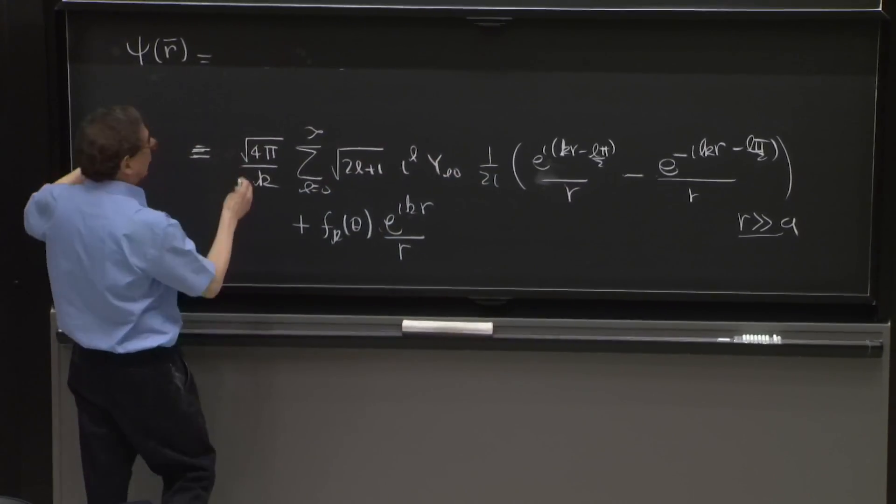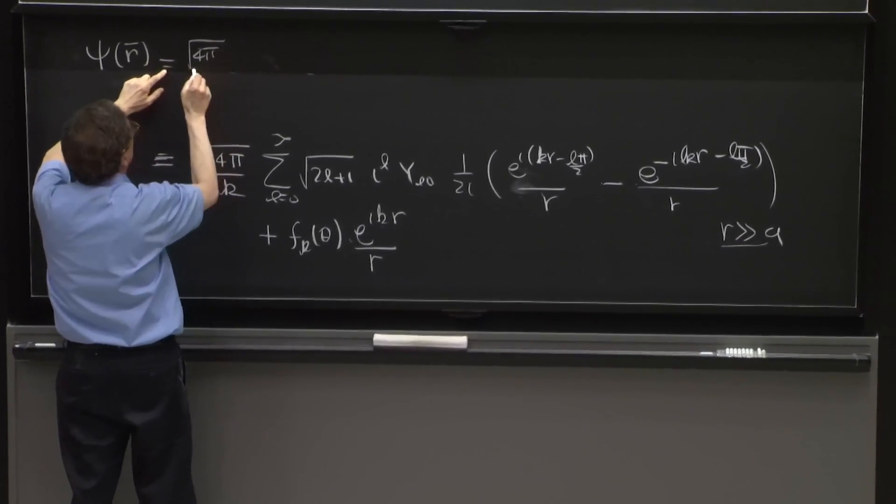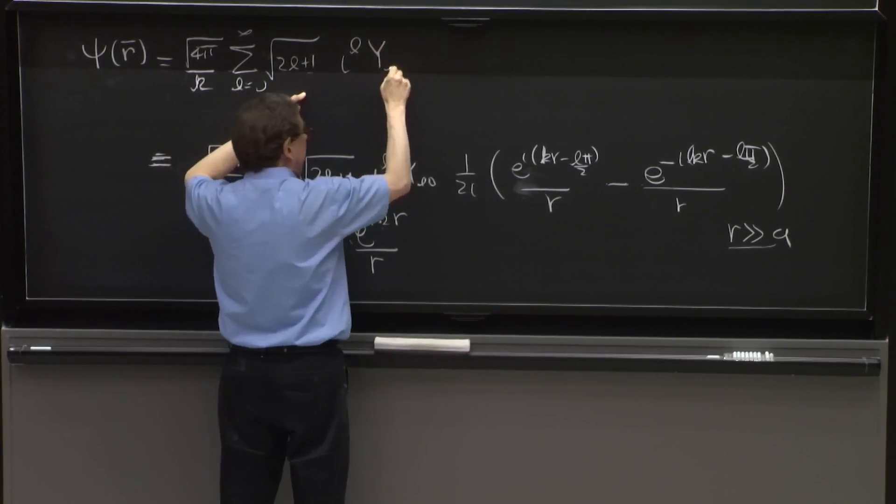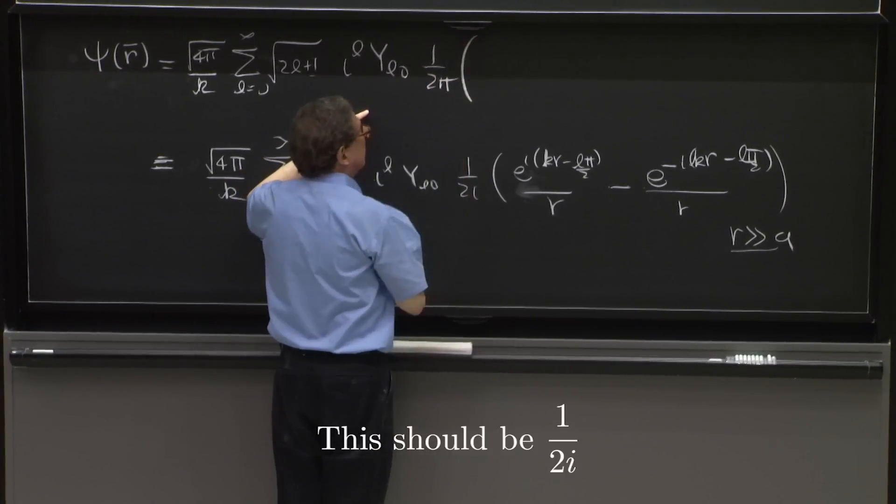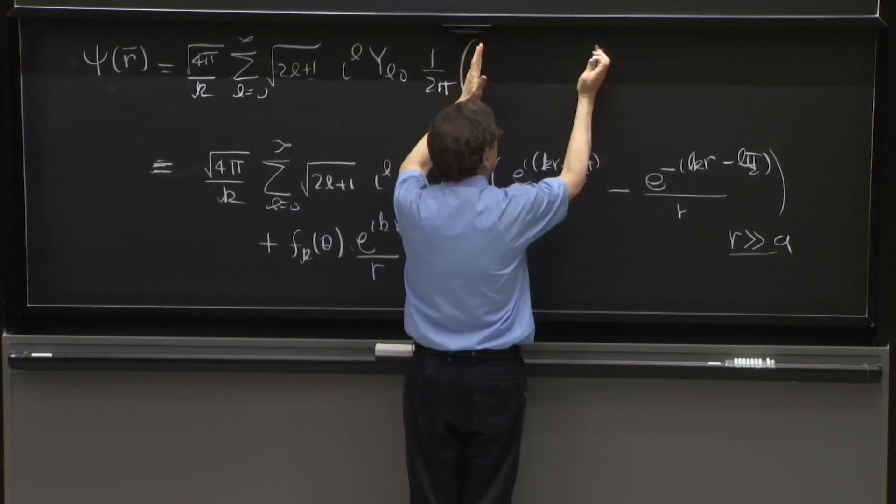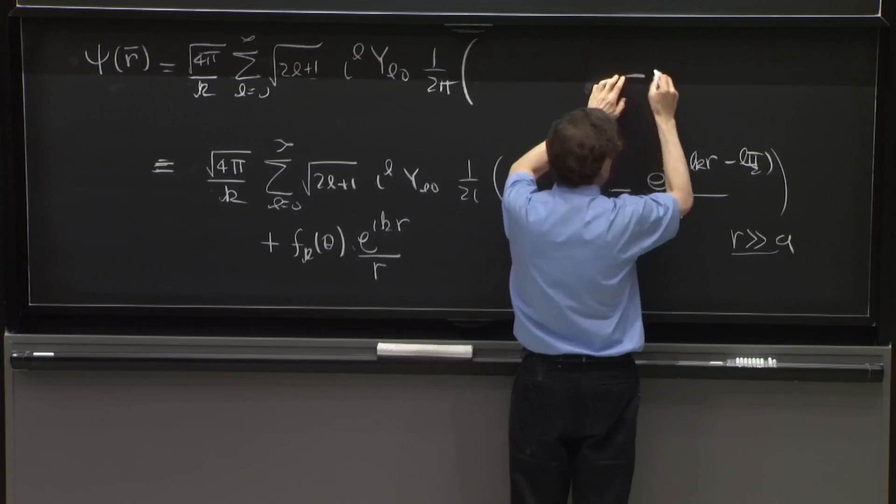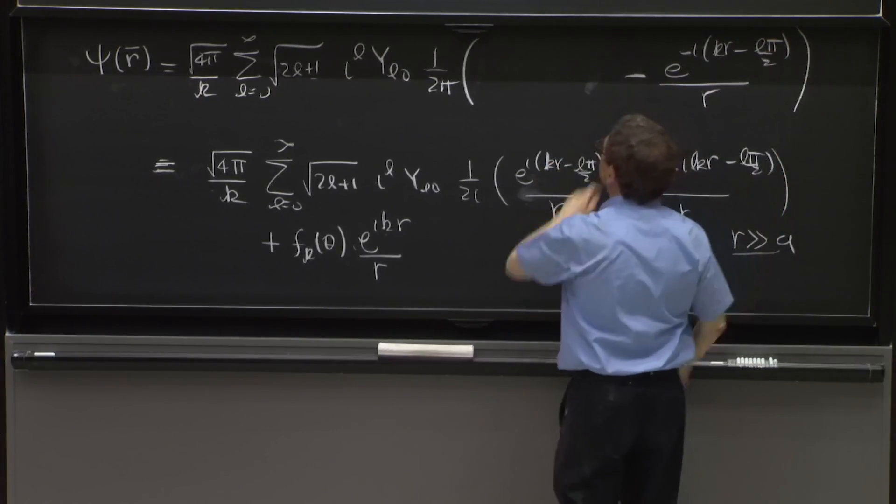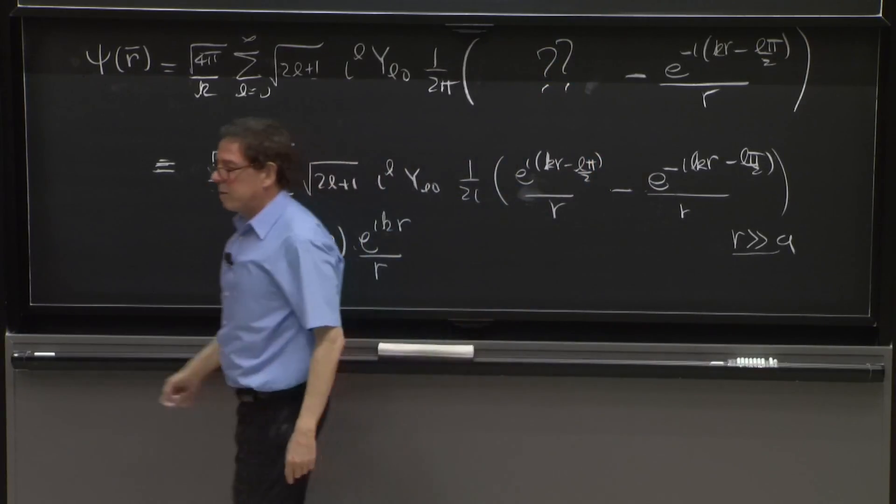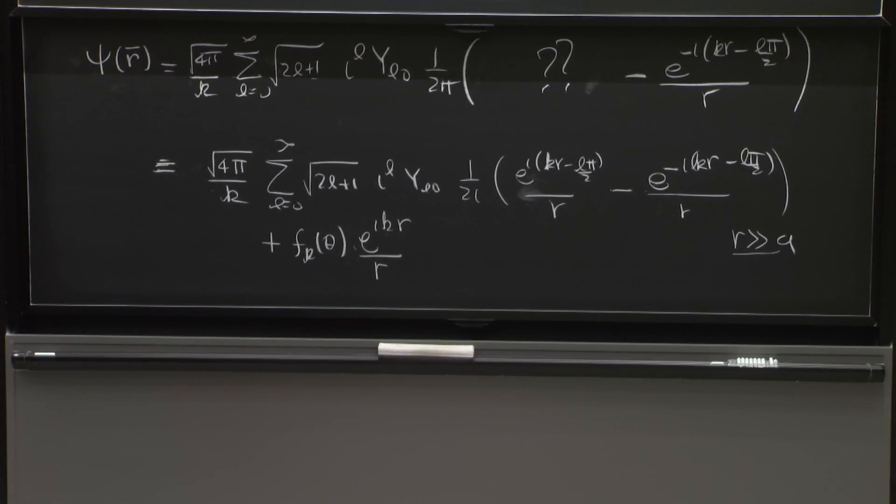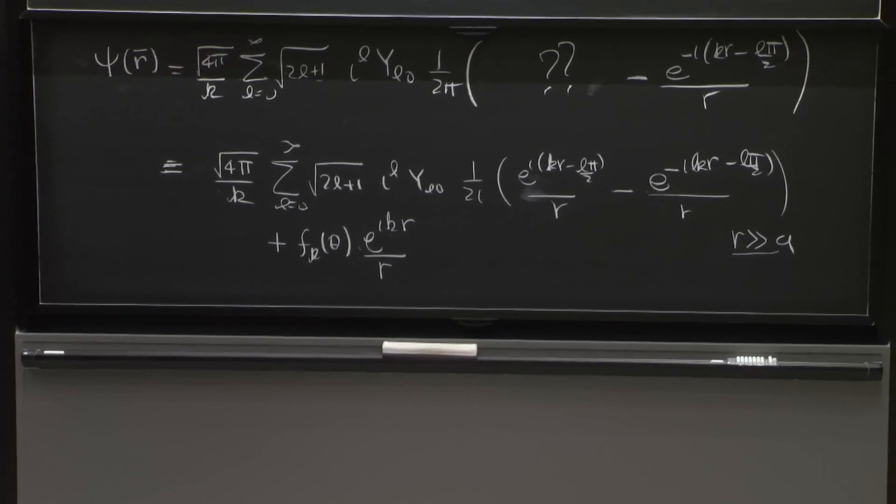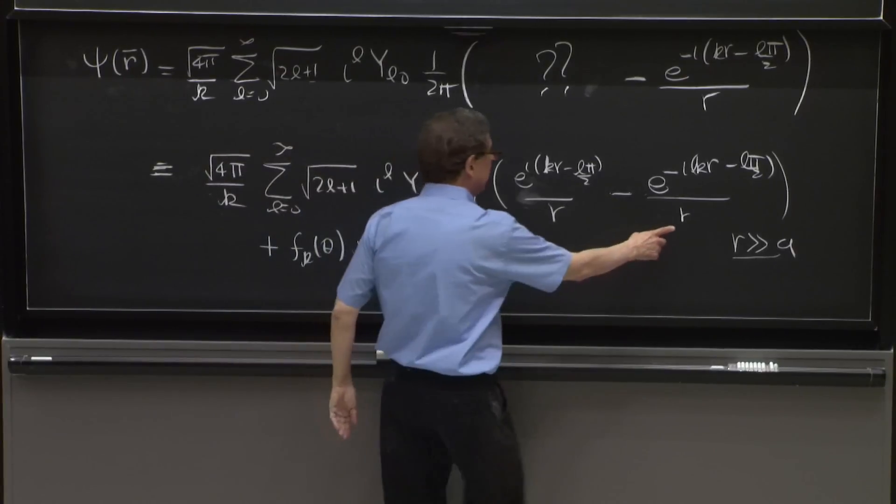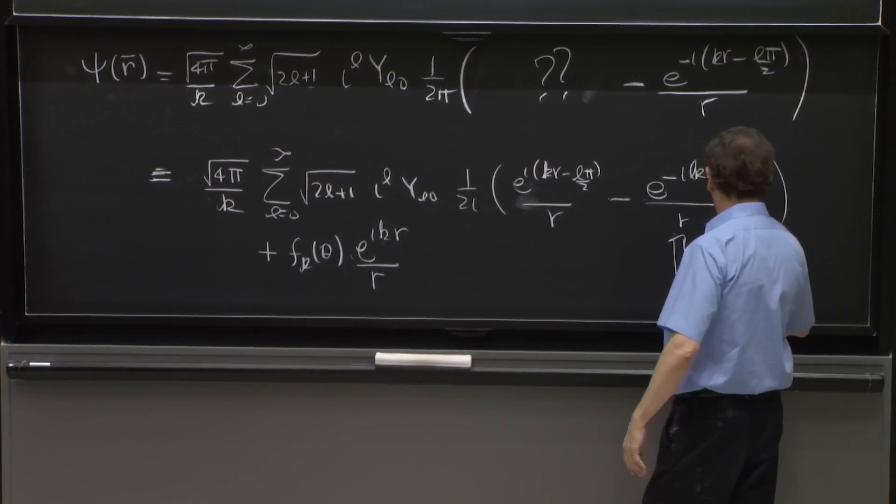So I'm going to write this left-hand side, and already use this, and put 4π over k square sum of l equals 0 to infinity, 2l plus 1, i to the l, Y_l0, 1 over 2i, big parentheses, and one outgoing wave, e to the minus i(kr minus lπ/2) over r. And here, I don't know what to put. But I've put already there on the left-hand side of this equation for psi of r for the full solution, a wave that matches the right-hand side, because it has the same incoming wave.